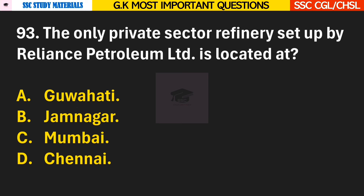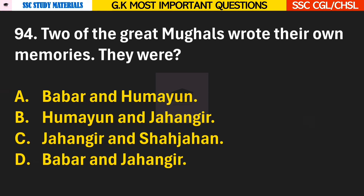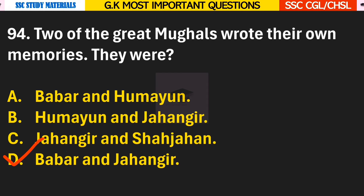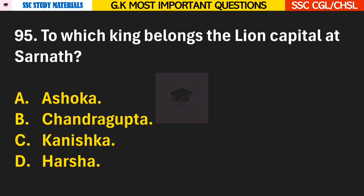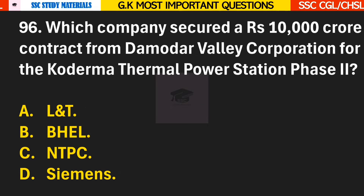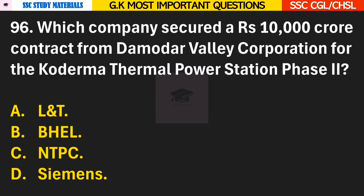Question 93: The only private sector refinery set up by Reliance Petroleum Limited is located at? Answer B — it is located at Jamnagar, which is in Gujarat. Question 94: Two of the great Mughals wrote their own memoirs; they were? Answer D — Babar and Jahangir. Question 95: To which king belongs the lion capital at Sarnath? Answer A — Ashoka. Question 96: Which company secured a Rs. 10,000 crore contract from Damodar Valley Corporation for the Koderma thermal power station phase 2? Answer B — BHEL.